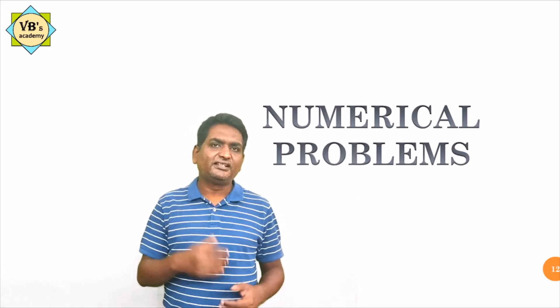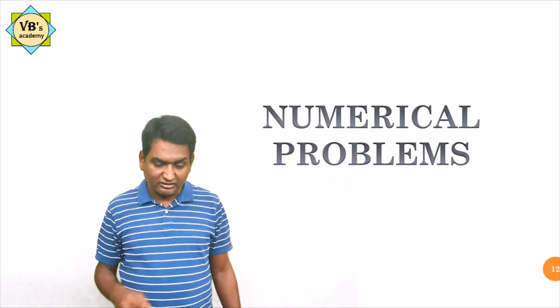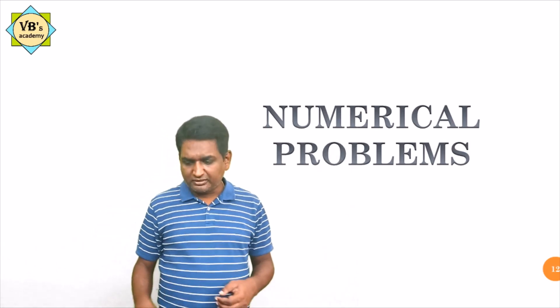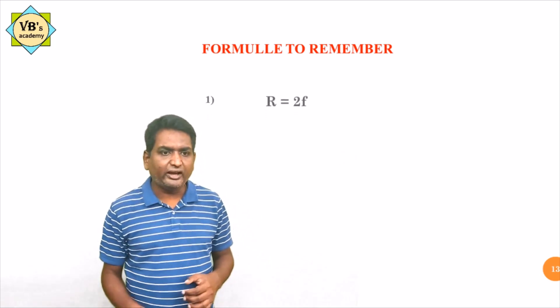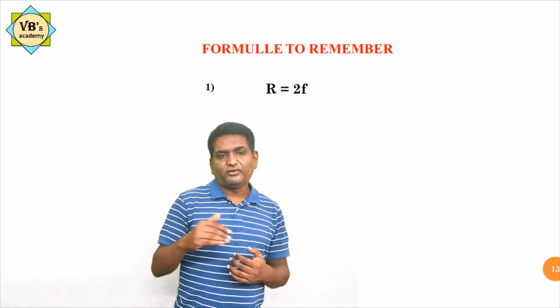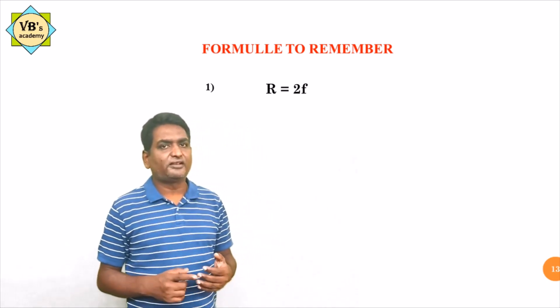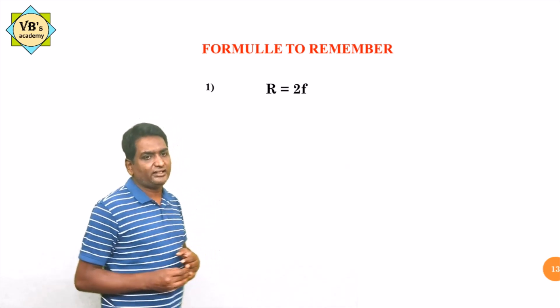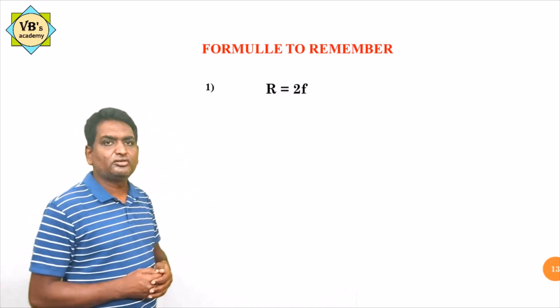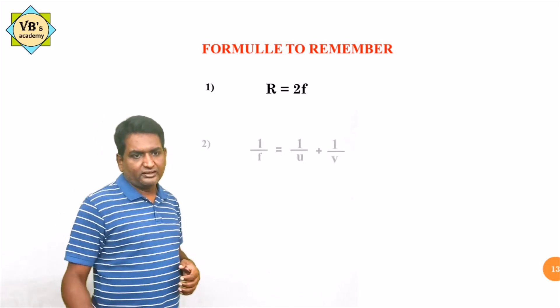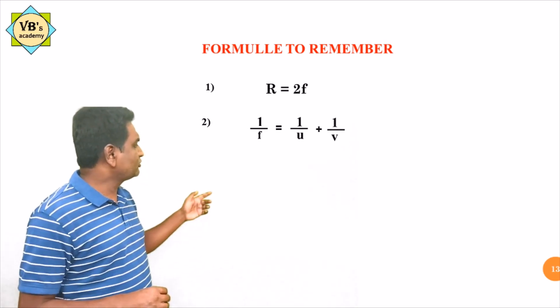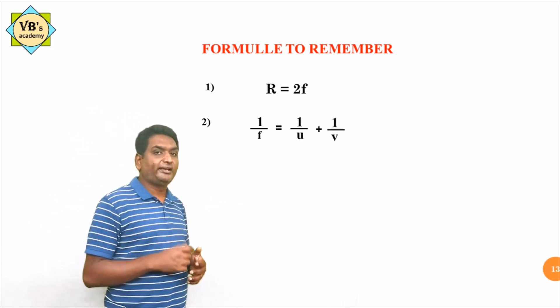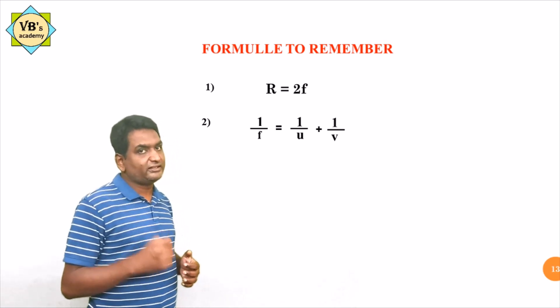In today's session we will see how to solve different problems in physics. Before going to discuss these problems, I want to recollect all the formulas in this particular chapter. The first formula is the relation between radius of curvature R and focal length F: R equals 2F.